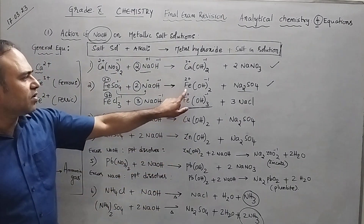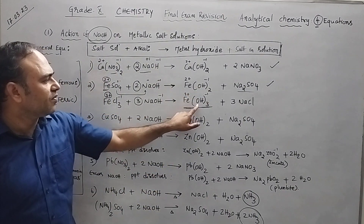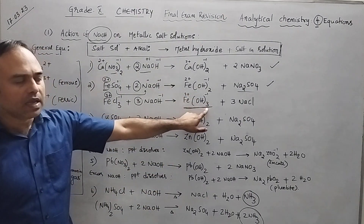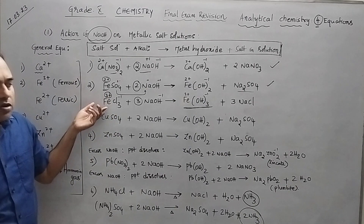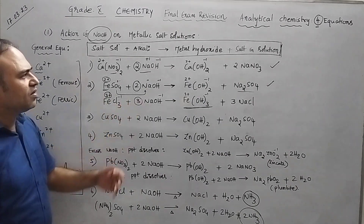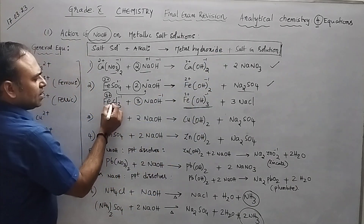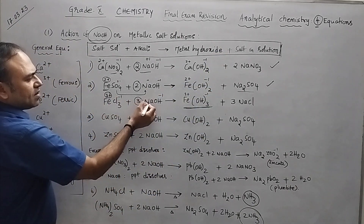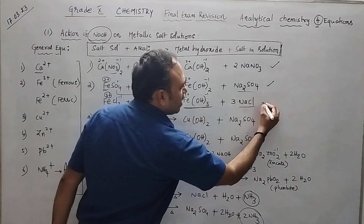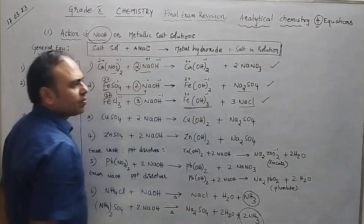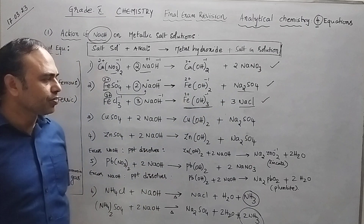Earlier it was Fe(OH)₂; now it is Fe(OH)₃ because of the 3+ charge. What is the final salt? You have Cl⁻ and Na⁺, so you get NaCl. Balancing is very simple.